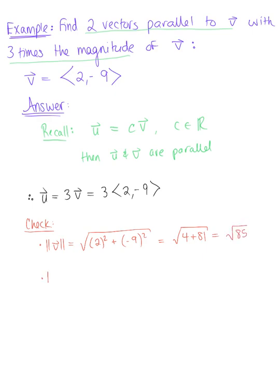In finding the magnitude of vector U, recall one of our properties of vectors is that we can pull a scalar multiple outside of the magnitude. This is equal to three times the magnitude of vector V. So this produces one vector with three times the magnitude of vector V.